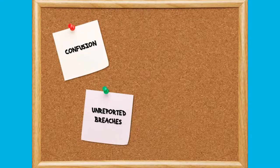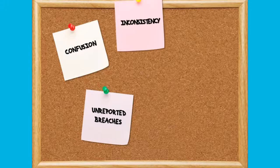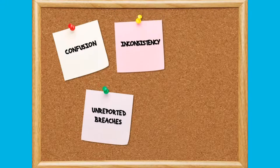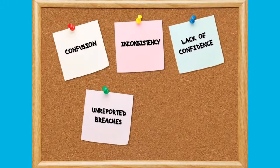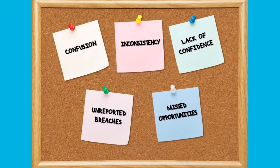Appropriate consequences for breaches may not be enforced due to confusion about what course of action to take. Similar breaches may be dealt with inconsistently, which may result in repeat offenses and a lack of confidence in your risk management strategy. Opportunities for training and improvement will also be more difficult to identify.